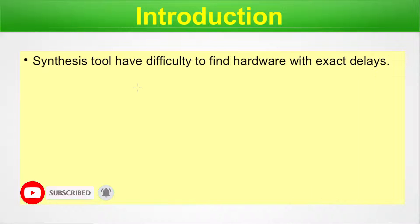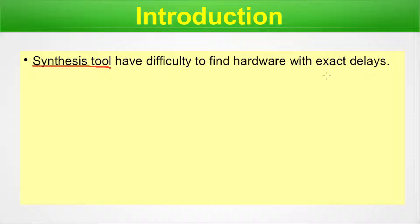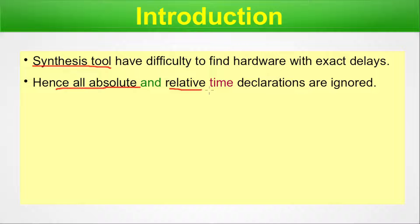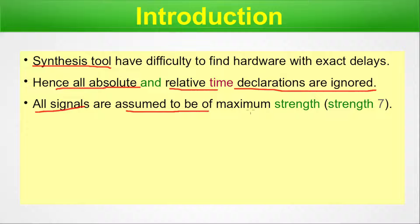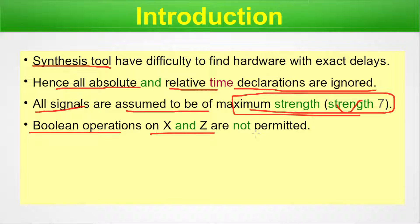Synthesis tools have difficulty finding hardware with exact delays. This is an inherent problem, and hence all absolute and relative time declarations are ignored — whatever delay values you give manually will be ignored. All signals are assumed to be maximum strength, signal strength 7. Boolean operations x and z are not permitted. Although in a test bench you can use x and z, in synthesis you cannot.